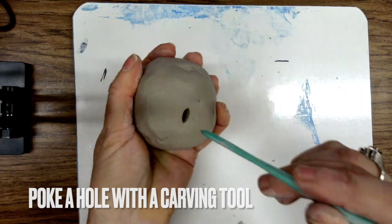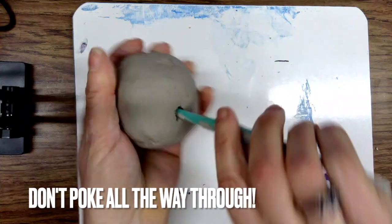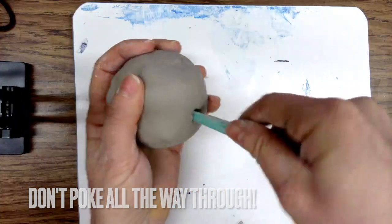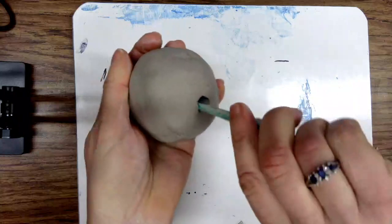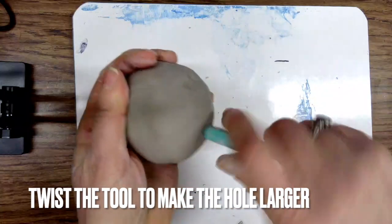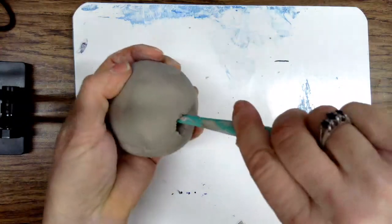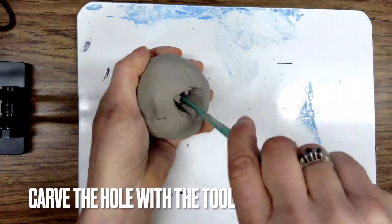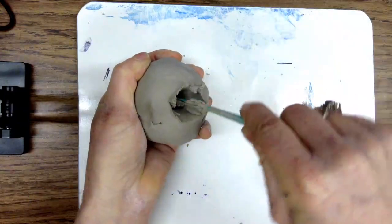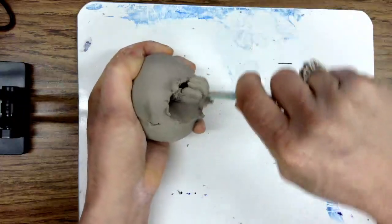When you have a nice smooth ball of clay, use your tool to poke a hole in the center. Don't poke all the way through. Start turning the tool to make the hole larger. Then use the tool to carve the hole even larger. Some clay will probably come out as you do this.